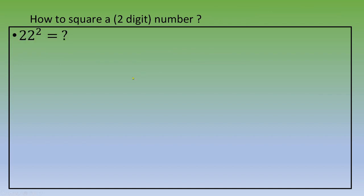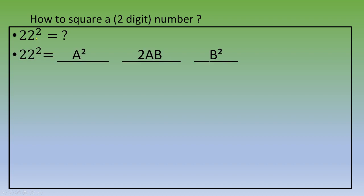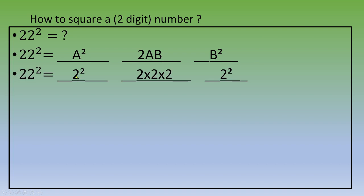What is 22 squared? We divide into three groups: a² is 2² for group 1, 2×2×2 for group 2, and 2² for group 3. If you calculate, the answer is 484.